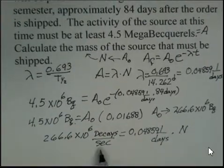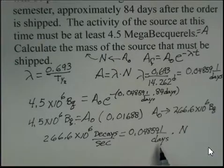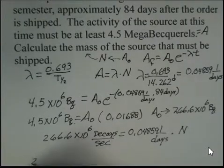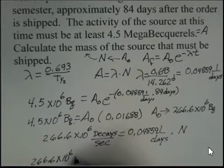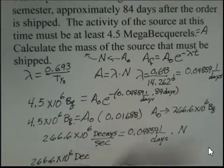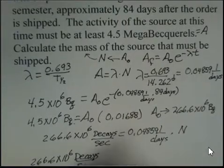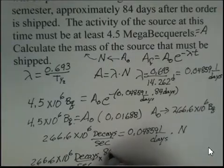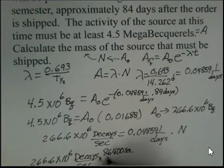I've got seconds on the left side in the denominator, but days on the right side. So I'm going to do a conversion. And I'm going to convert the seconds into days. So 266.6 times 10 to the 6 decays per second. You could also convert the days into seconds, but we need to multiply by the number of seconds in a day, 86,400 seconds in a day.